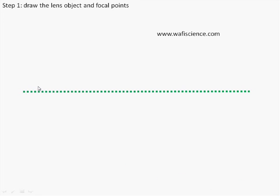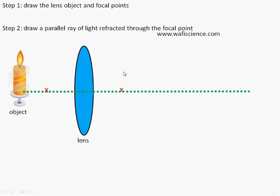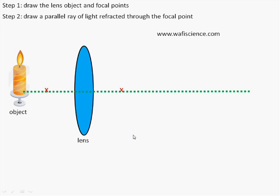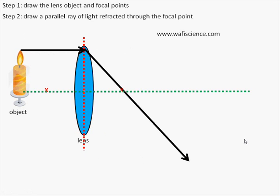So let's look at the rules for drawing these kind of diagrams. Step one, you have to draw the lens, the object, and the focal points. So here we have the lens, the object, and the focal points. The next step is to draw a parallel ray of light refracted through the focal point. So you just draw a ray of light that is parallel to this central line. I'll just put in the center of the lens there. And it is refracted through the focal point.